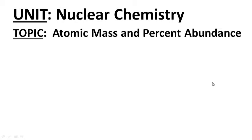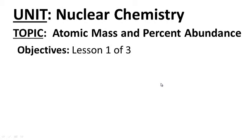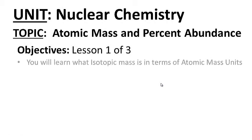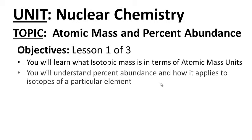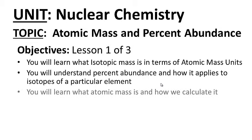Welcome to our unit on nuclear chemistry. Today's topic is atomic mass and percent abundance — lesson one of three. Your objectives are as follows: you will learn what isotopic mass is in terms of atomic mass units, you will understand percent abundance and how it applies to isotopes of a particular element, and you will learn what atomic mass is and how we calculate it.